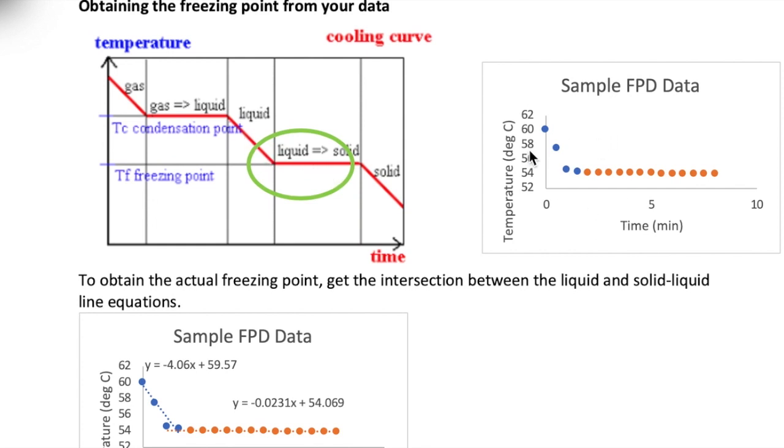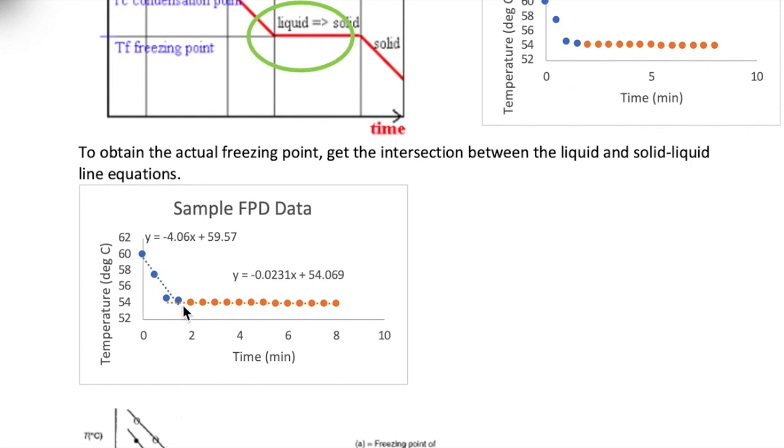In your experiment, the data will look like the plot shown here on the right in Excel. To get the actual freezing point, what you have to do is draw best fit lines for the two plots and then find the intersection temperature of those two lines from your equations.